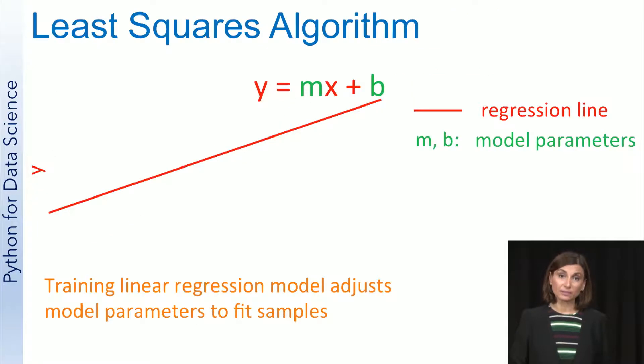In the simple case with just one input variable, the regression line is simply a line. The equation for the line is y equals m times x plus b, where m determines the slope of the line, and b is the intercept, or where the line crosses the y-axis, and m and b are the parameters of the model. Training a linear regression model means adjusting these parameters to fit the regression line to the samples.